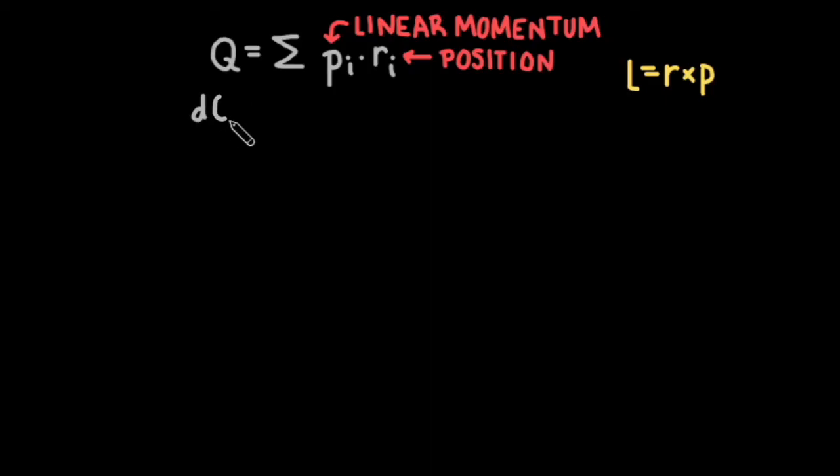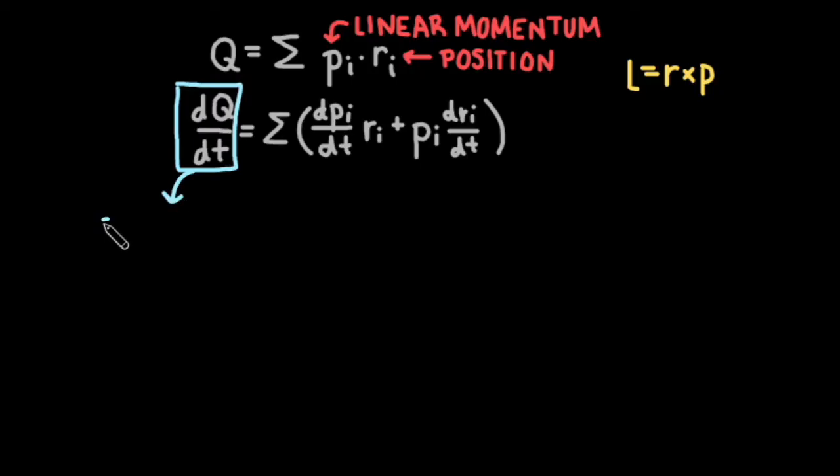Now, we can take a time derivative of q. Applying the product rule for derivatives, this gets us dp dt times r plus p times dr dt on the left-hand side of the equation. Since linear momentum is mass times velocity, we can split q apart into the product of m times the velocity, or dr dt, times the position vector r.